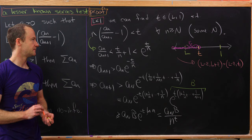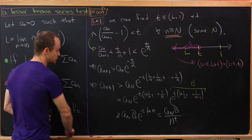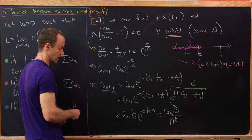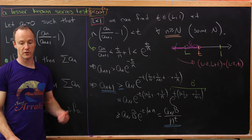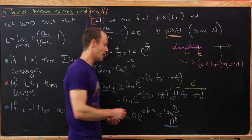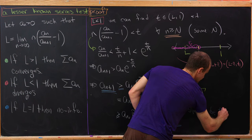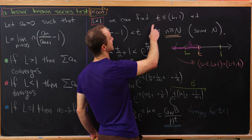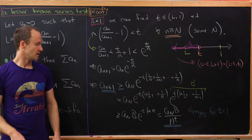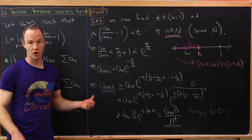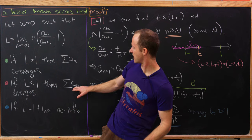So for all n greater than capital N, the terms a_{n+1} are bigger than a constant divided by n to the t. We know that a sum of one over n^t diverges because t is less than one — t is between l and one — by the p-series test. Since this diverging series is bounded above by our series, our series also must diverge. That finishes the proof of the divergence portion.